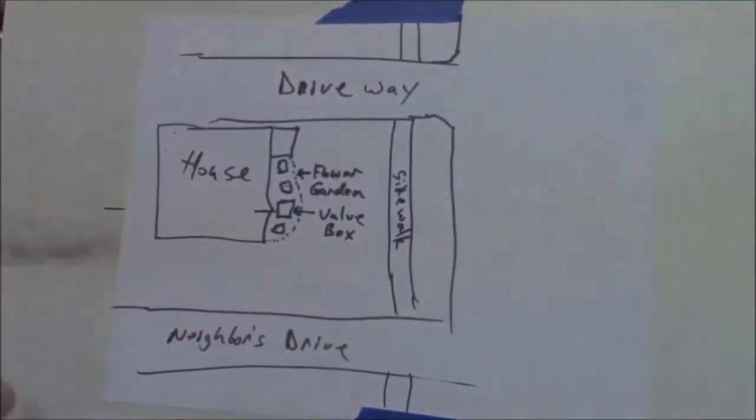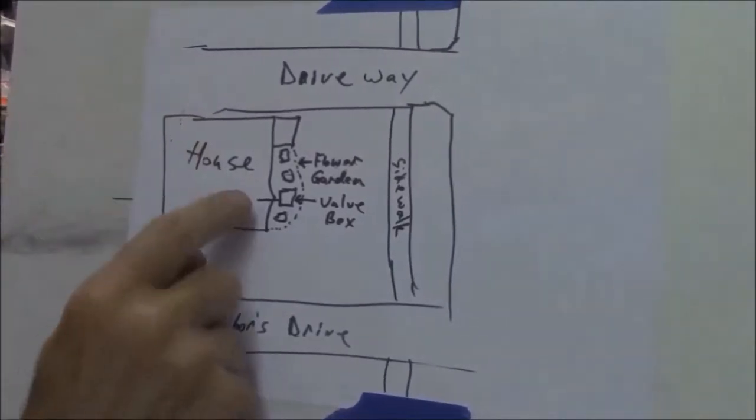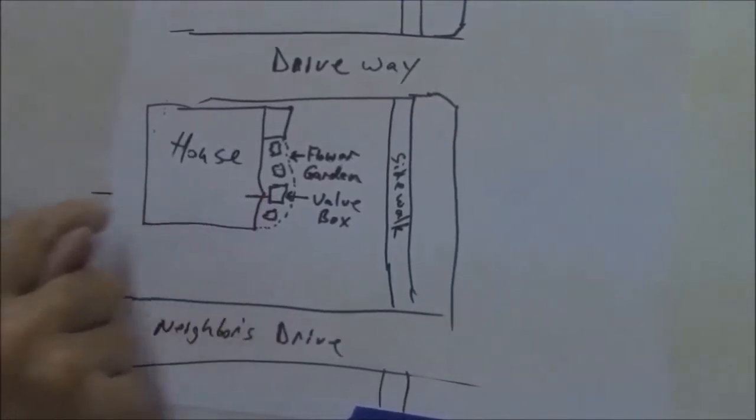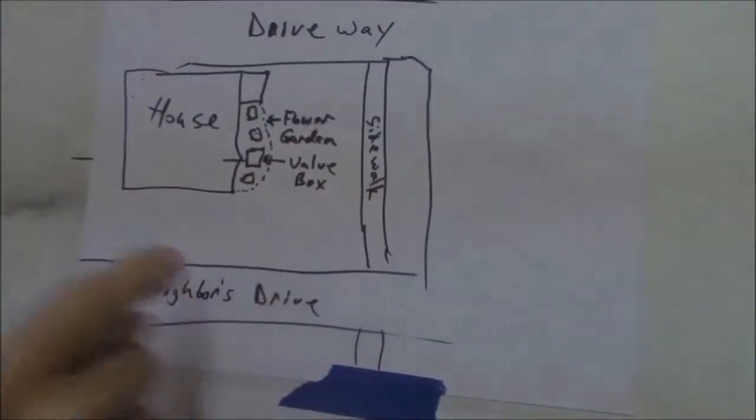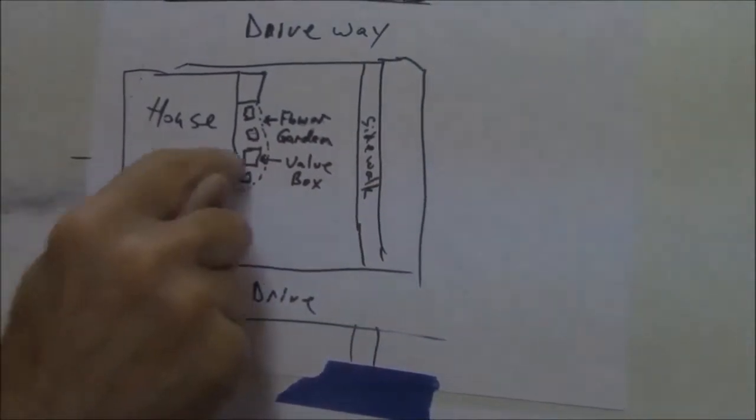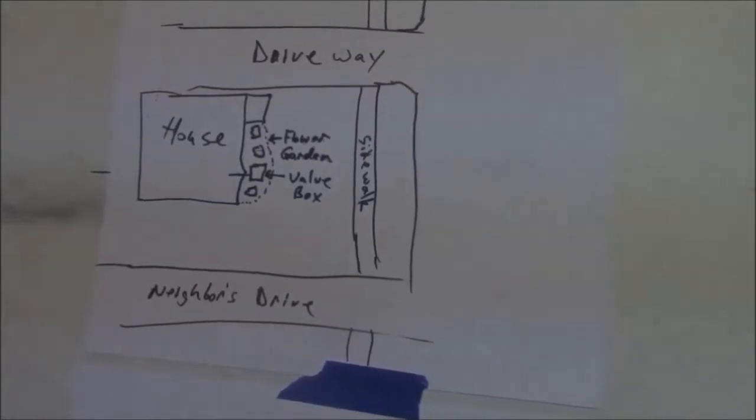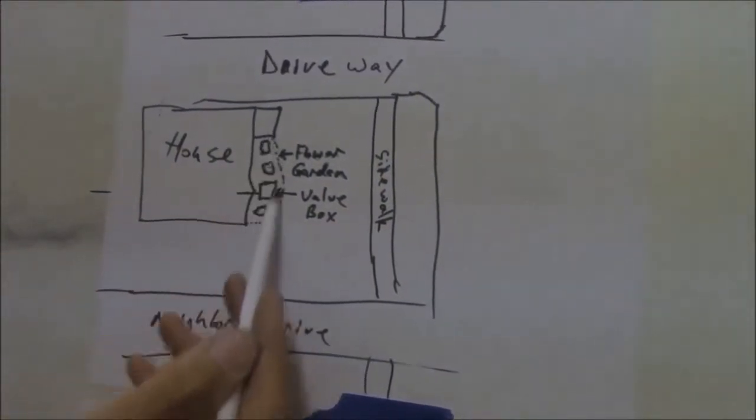This is a top view of a yard. I got the neighbor, I got my house, I got a driveway. I come out of the house to a valve box because I want to send water. I don't have enough water in most houses to water my whole yard at one time. So I need to put a valve box in, so I can put in some mist heads that will water just my flower garden.